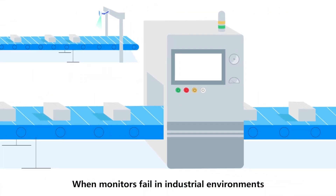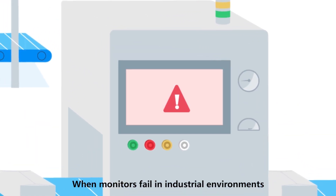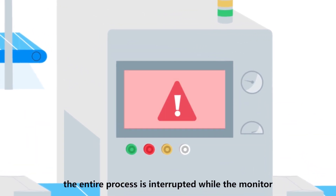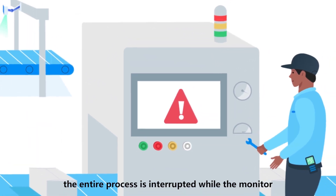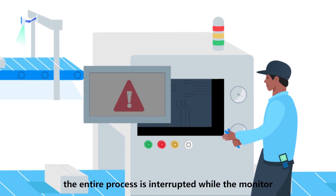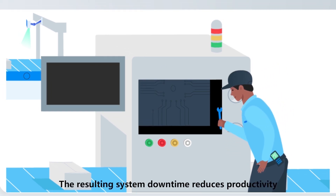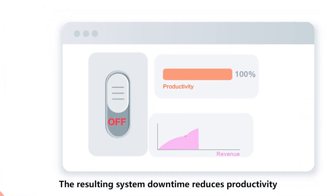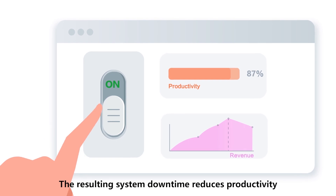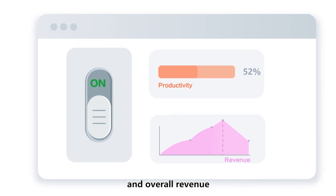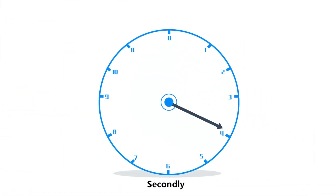When monitors fail in industrial environments, the entire process is interrupted while the monitor is replaced or repaired. The resulting system downtime reduces productivity and overall revenue.